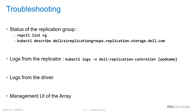Last but not least, a note on troubleshooting. Since everything is Kubernetes-native — Kubernetes objects — you can use kubectl commands to get status on the replication group. You can use the RepCTL command to get more details, and you can use the same tools used every day to debug CSI drivers: kubectl logs, going to the array, et cetera.